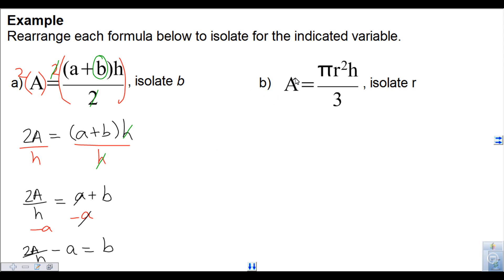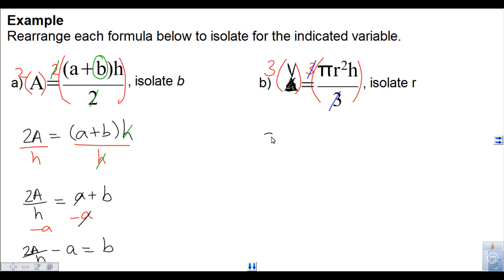This is the formula for the volume of a cone — let's isolate R. Again, I want to remove the fraction, so this divided by 3 means I'm going to multiply both sides by 3. Those 3s divide out, leaving 3V on the left equal to pi r squared h on the right. Now I want to isolate r, but it's being multiplied by pi and h, so I'm going to divide both sides by pi and h.